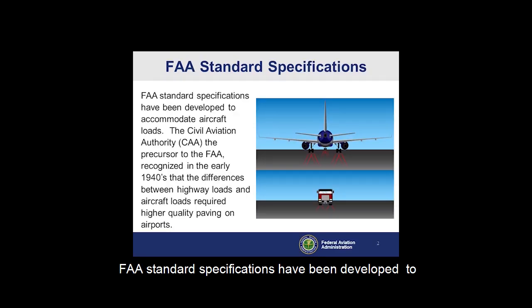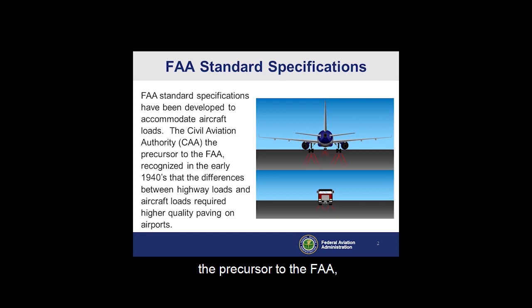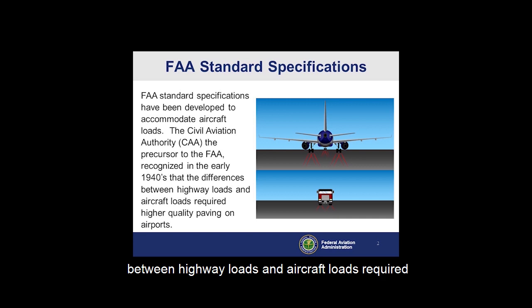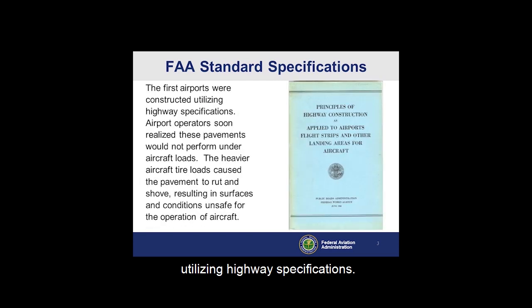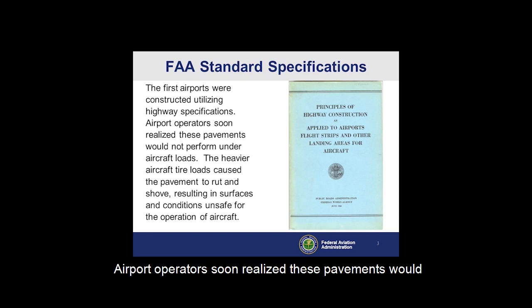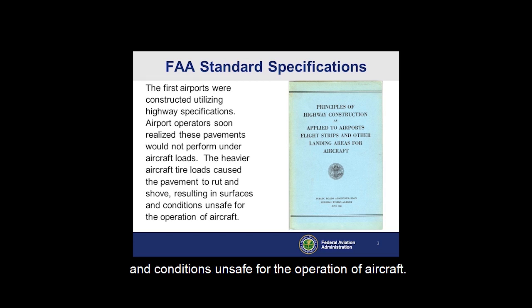FAA Standard Specifications have been developed to accommodate aircraft loads. The Civil Aviation Authority (CAA), the precursor to the FAA, recognized in the early 1940s that the differences between highway loads and aircraft loads required higher quality paving on airports. The first airports were constructed utilizing highway specifications, but airport operators soon realized these pavements would not perform under aircraft loads. The heavier aircraft loads caused the pavement to rut and shove, resulting in surface conditions unsafe for the operation of aircraft.